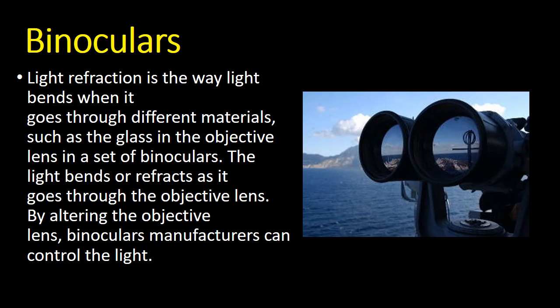In binoculars or telescopes, light refraction is the way light bends when it goes through different materials such as glass in the objective lens in a set of binoculars. The light bends or refracts as it goes through the objective lens. By altering the objective lens, binoculars manufacturers can control the light.